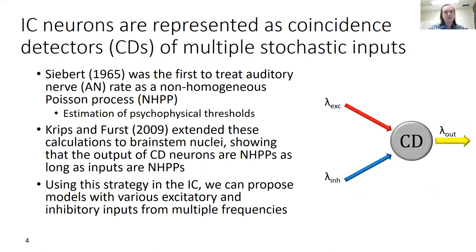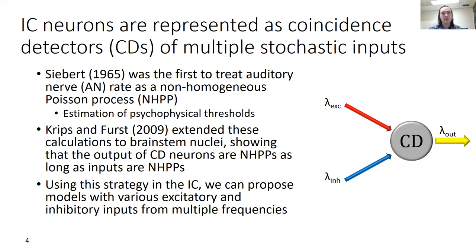To answer this question, we need a model. Our modeling strategy goes back to foundational work done by Siebert in the 1960s, who was the first to represent auditory nerve rates as non-homogeneous Poisson processes. This importantly allows the estimation of psychophysical thresholds. Later, Cripson first extended these calculations to brainstem nuclei to show that you could treat the IC neuron as a coincidence detector of multiple excitatory and inhibitory inputs, and as long as those inputs were all non-homogeneous Poisson processes, the output would also be a non-homogeneous Poisson process.